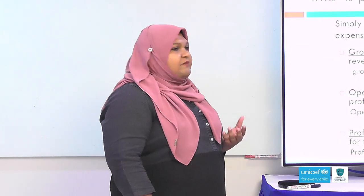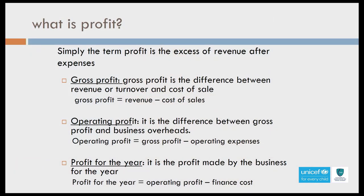Simply, profit is the excess of revenue after expenses. In our syllabus, profit is further distributed into three different types. The first is gross profit, which is the difference between revenue or turnover and cost of sales — the costs directly associated with production. The second type is operating profit, which is the difference between gross profit and business overheads. The formula is: operating profit equals gross profit minus operating expenses.